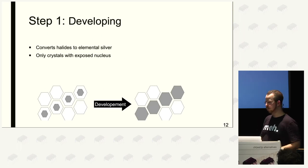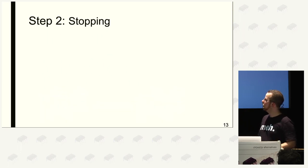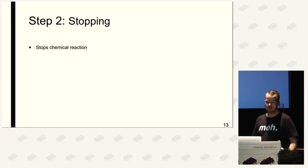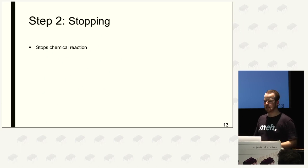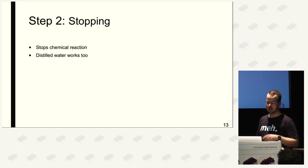To amplify the latent image we pour in the developer — the first chemical — which works by turning all the silver halide crystals that already have an exposed nucleus into full metallic silver crystals. It only acts on crystals with a nucleus, so everything that hasn't seen light is unaffected. Once we pour out the developer, we apply a stop bath — a chemical that neutralizes the developing agent and stops the reaction. If you don't want to buy a stop bath, you can also just use distilled water and rinse it off.